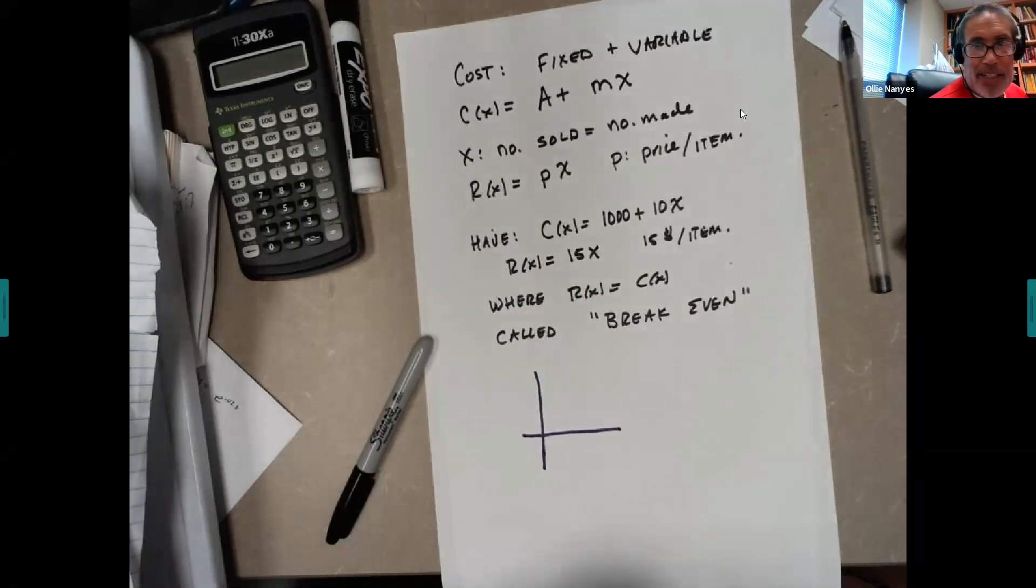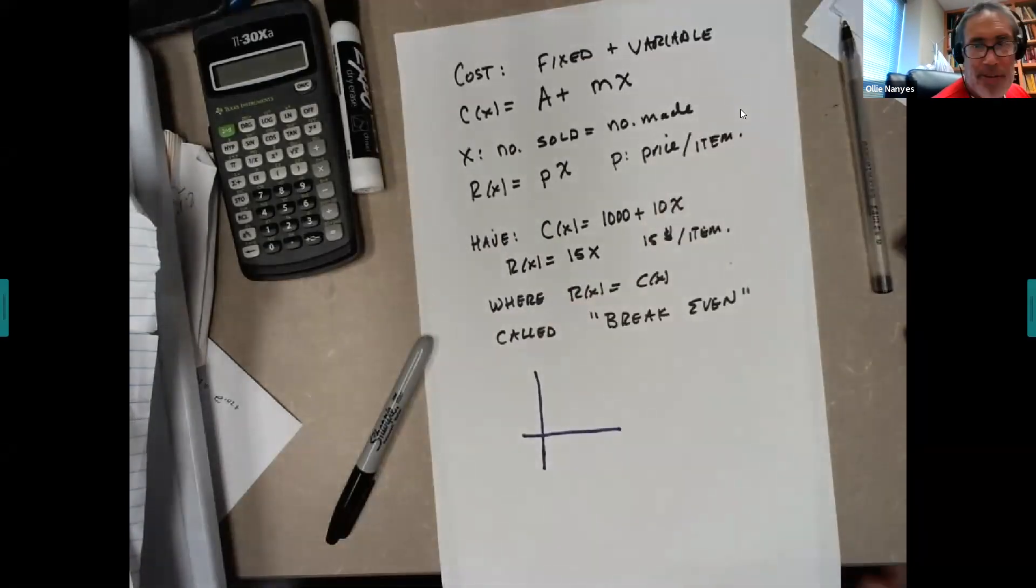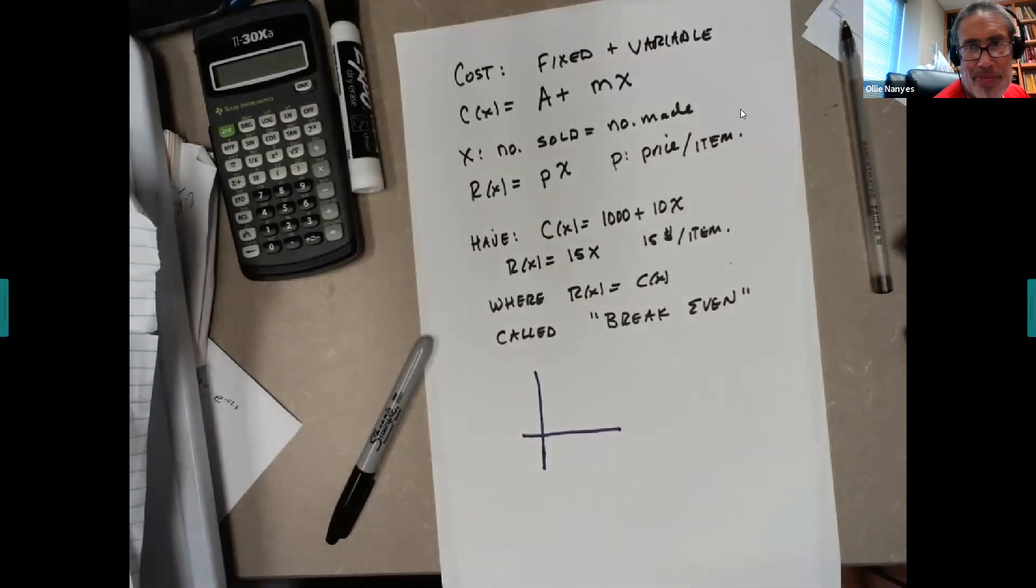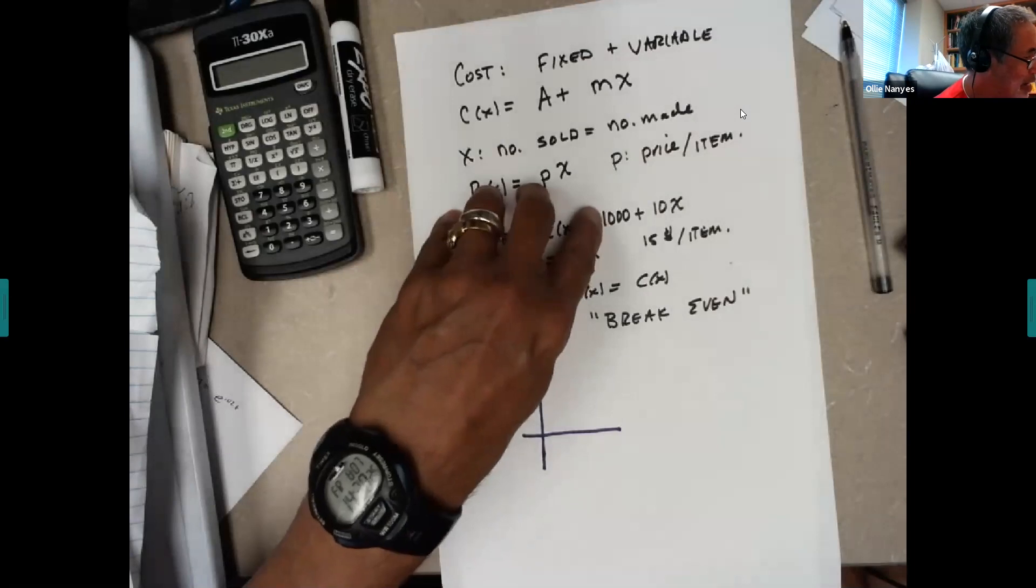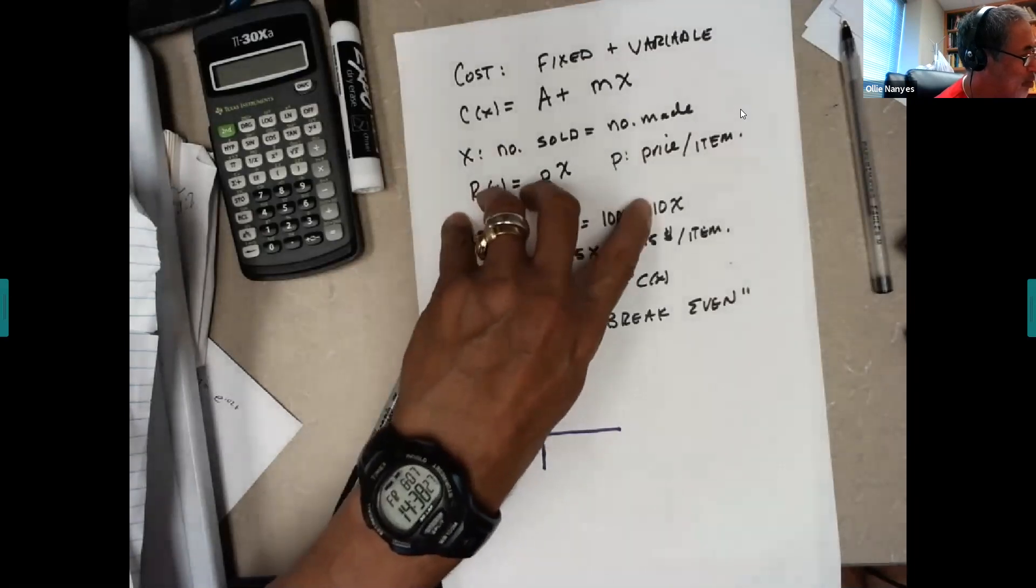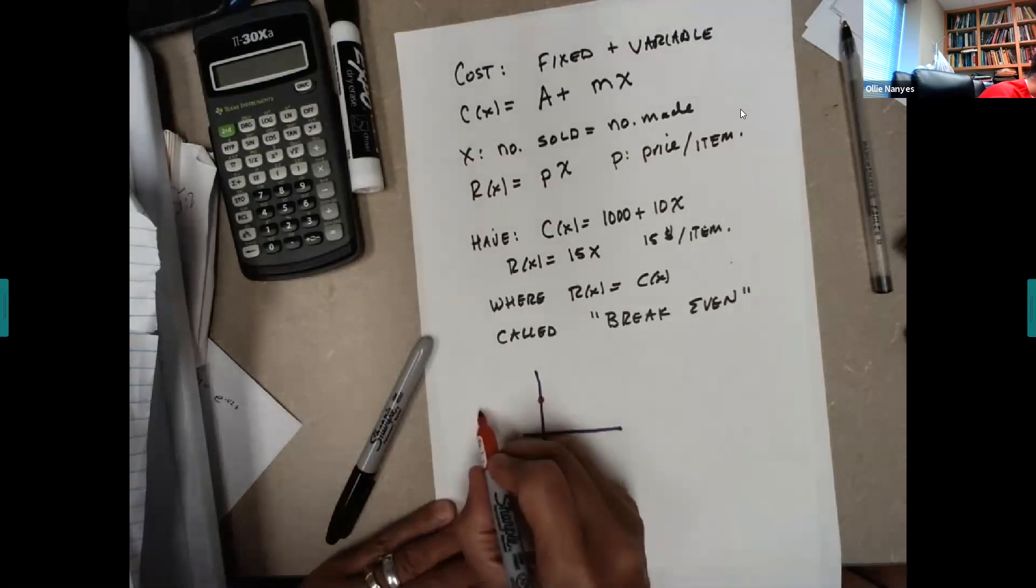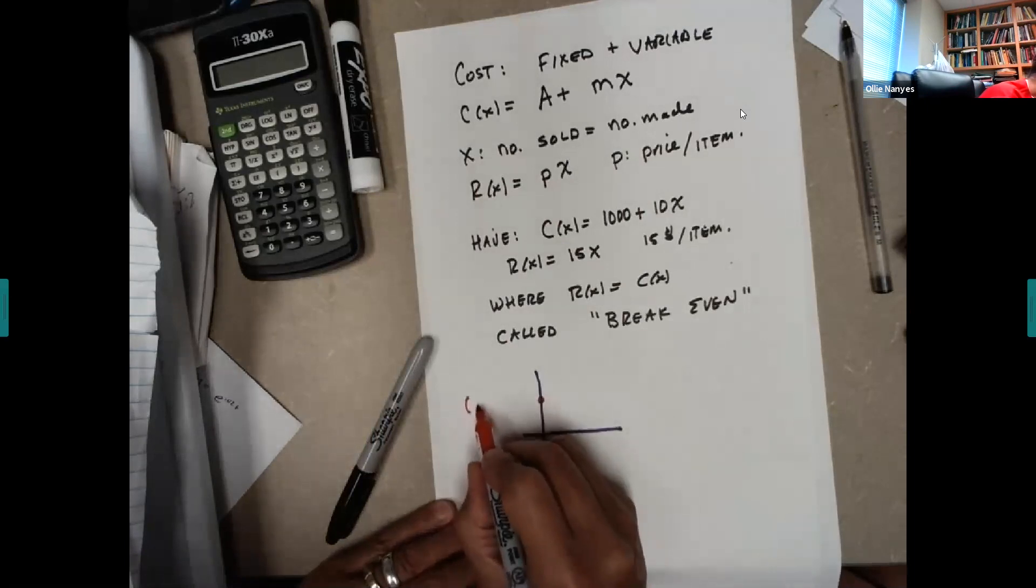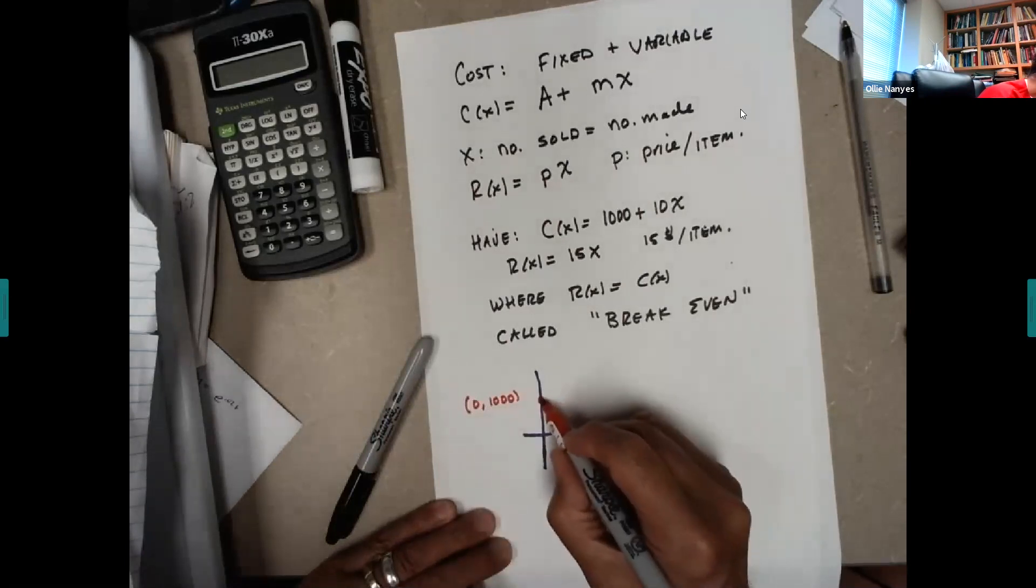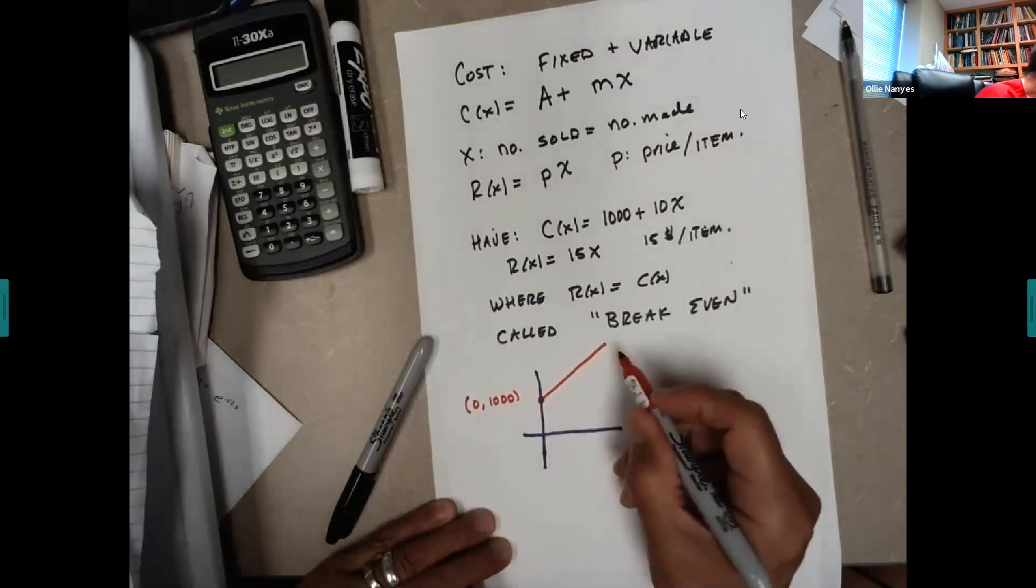Now we can tell our cost. Our cost, we're just going to go ahead and say, well, that's a line. It has Y intercept 1000 and slope 10. So if X is 0, that's 1000. And it has slope 10. So it goes up something like this.